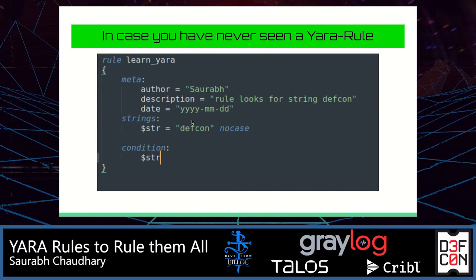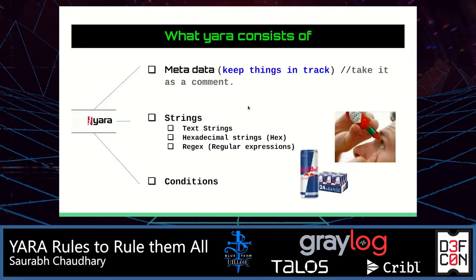So what's happening in this example rule? This rule is trying to find the word DEFCON in any case — jumbled case, uppercase, lowercase. And if anything has this string key, it will flag. So what is YARA made of? It consists of three things: metadata to keep things on track, strings, and conditions.